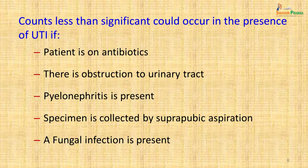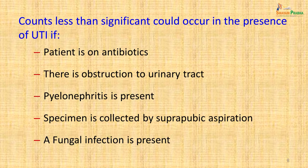Counts less than 10⁵ per ml can still be significant in the presence of urinary tract infection if the patient is on antibiotics, there is obstruction to the urinary tract, pyelonephritis is present, specimen is collected by suprapubic aspiration, or a fungal infection is present. In these situations, the standard criteria do not apply.